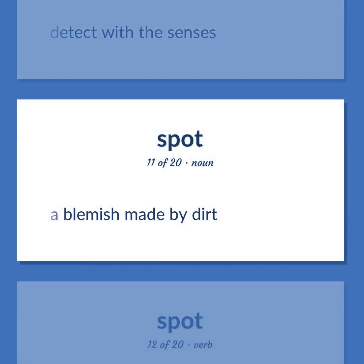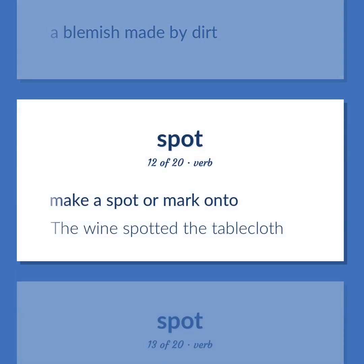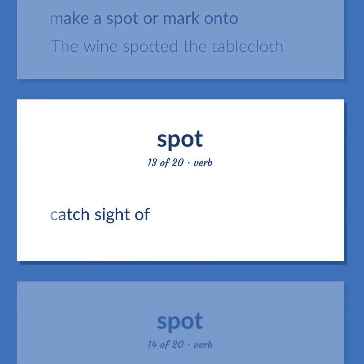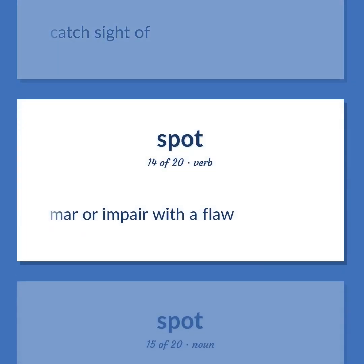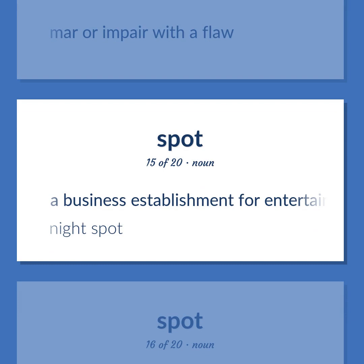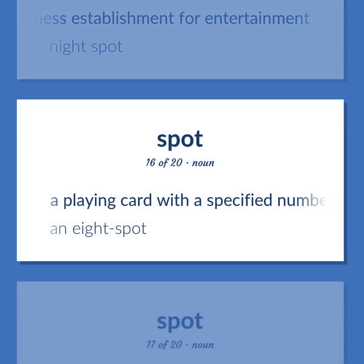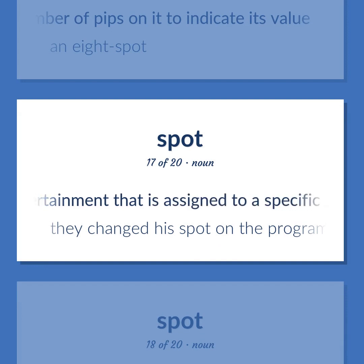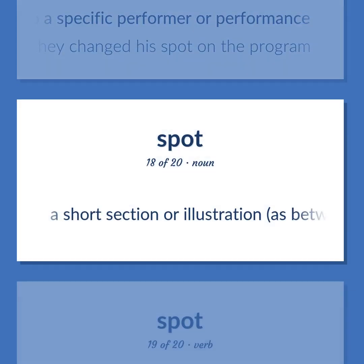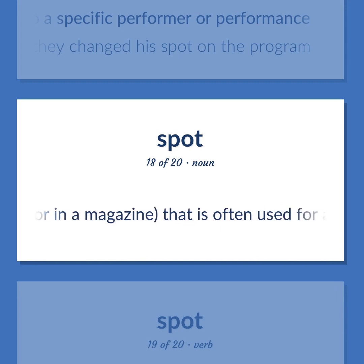Spot (verb/continued): A blemish made by dirt. Make a spot or mark onto — the wine spotted the tablecloth. Catch sight of. Mar or impair with a flaw. A business establishment for entertainment — night spot. A playing card with a specified number of pips on it to indicate its value — an eight spot. A section of an entertainment that is assigned to a specific performer or performance — they changed his spot on the program. A short section or illustration, as between radio or TV programs or in a magazine, that is often used for advertising.